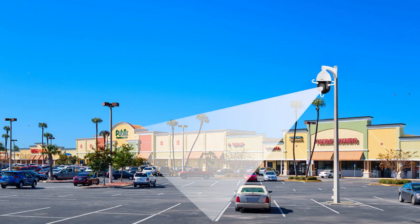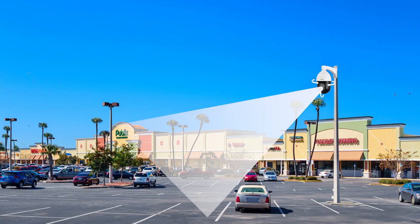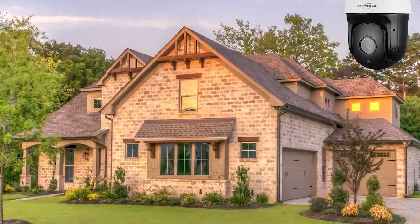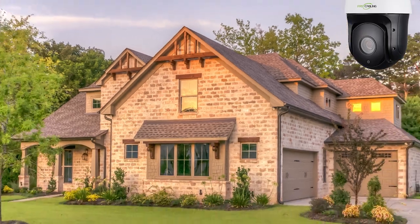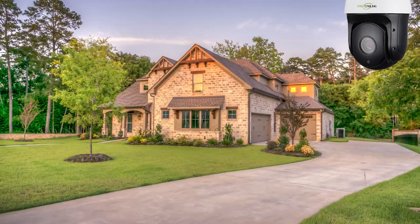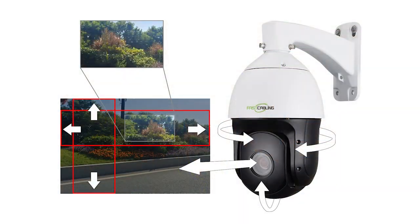Tilt allows the camera to angle up and down, providing a comprehensive vertical view. Lastly, zoom lets users magnify distant objects for detailed scrutiny. This versatility sets the PTZ camera apart from fixed cameras, offering the ability to cover a larger area or focus on specific details.